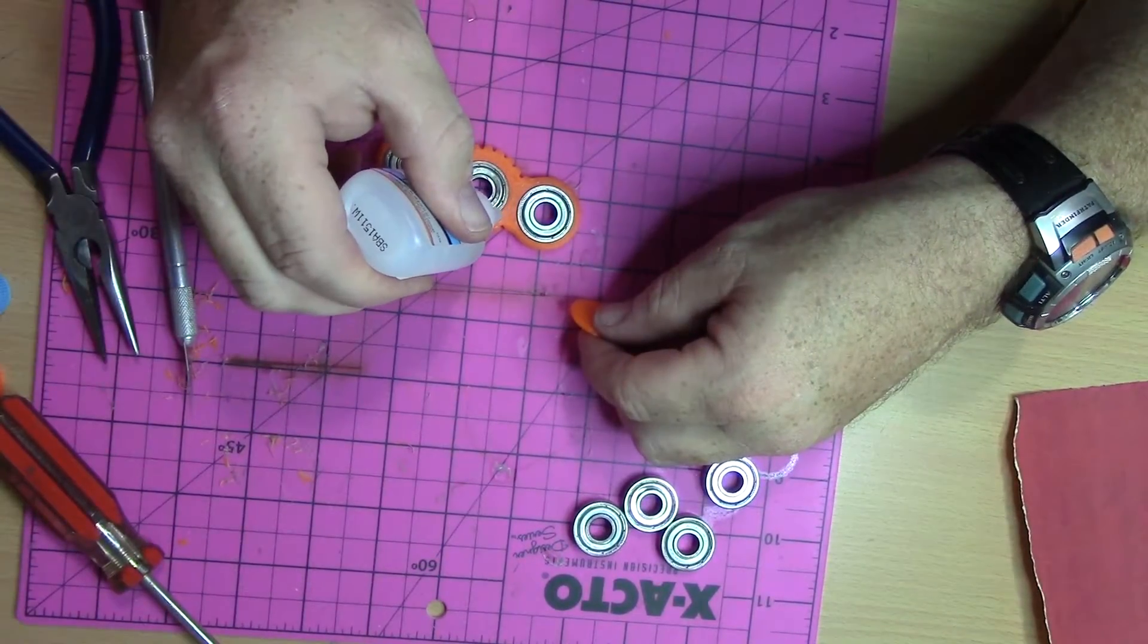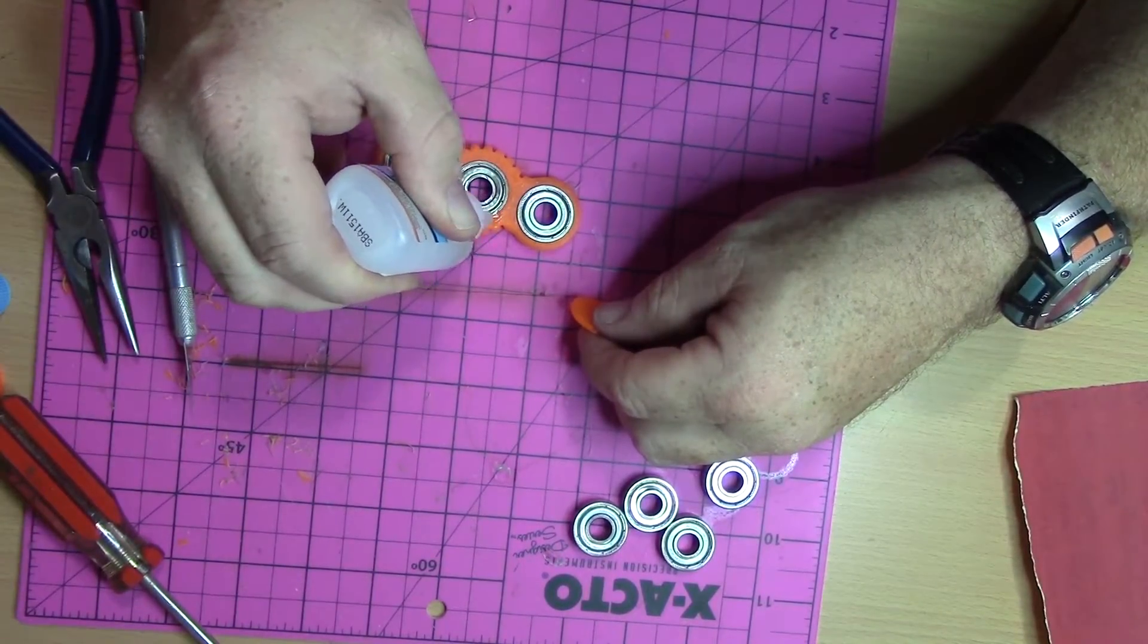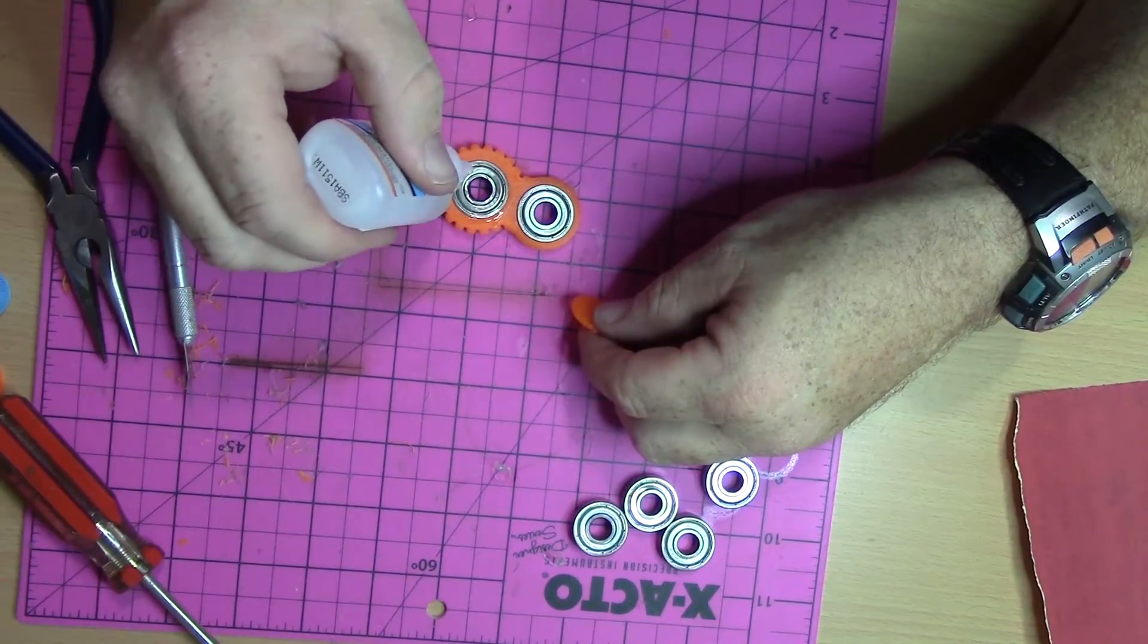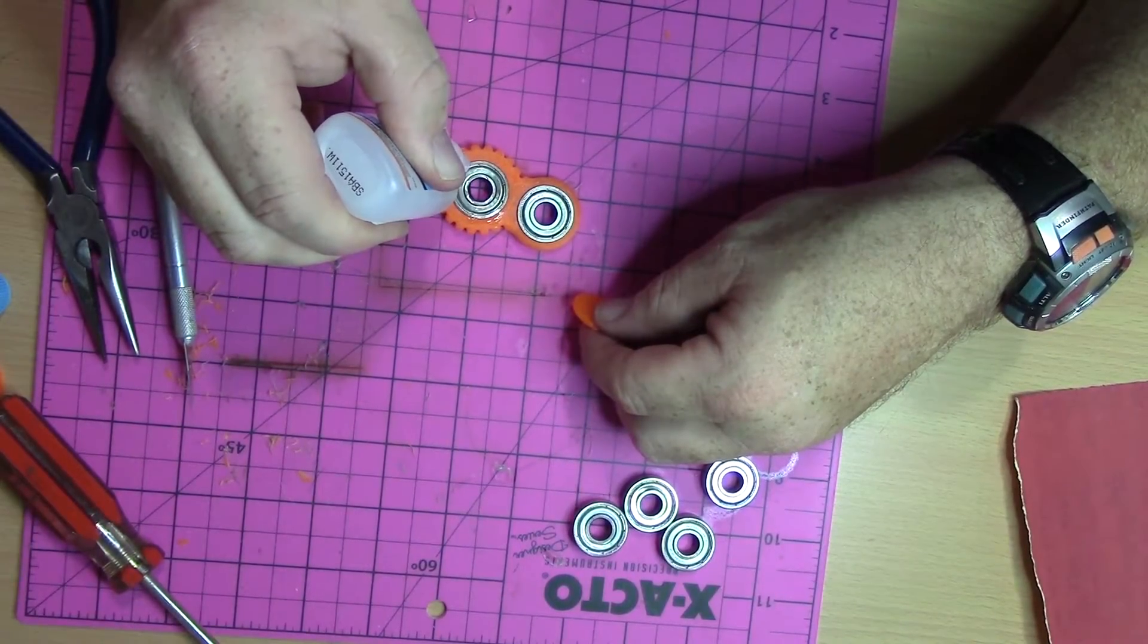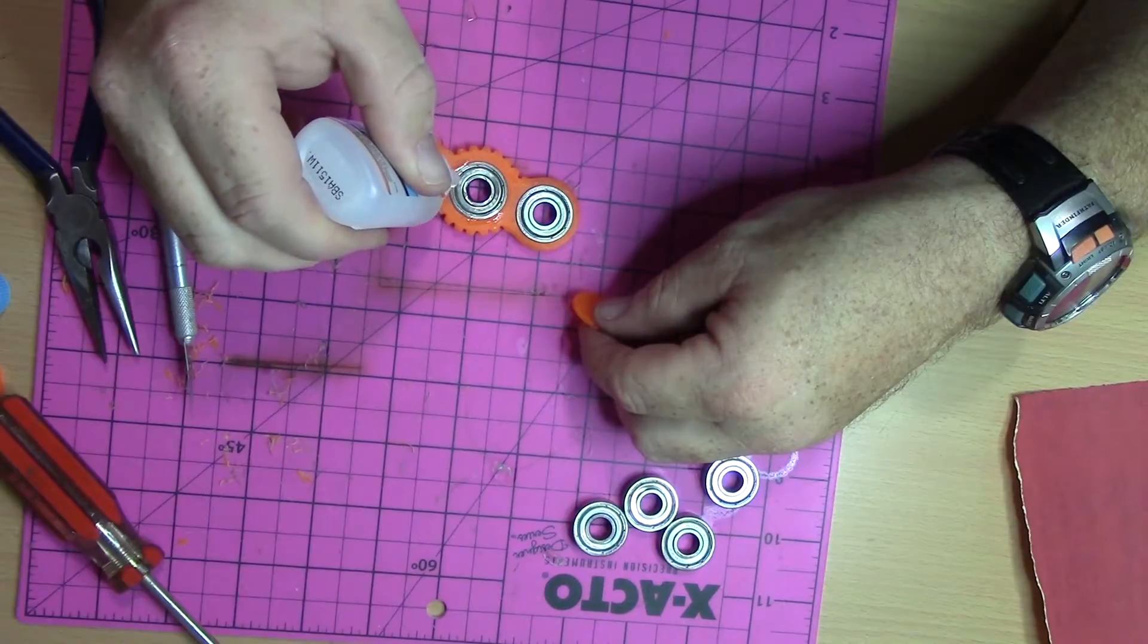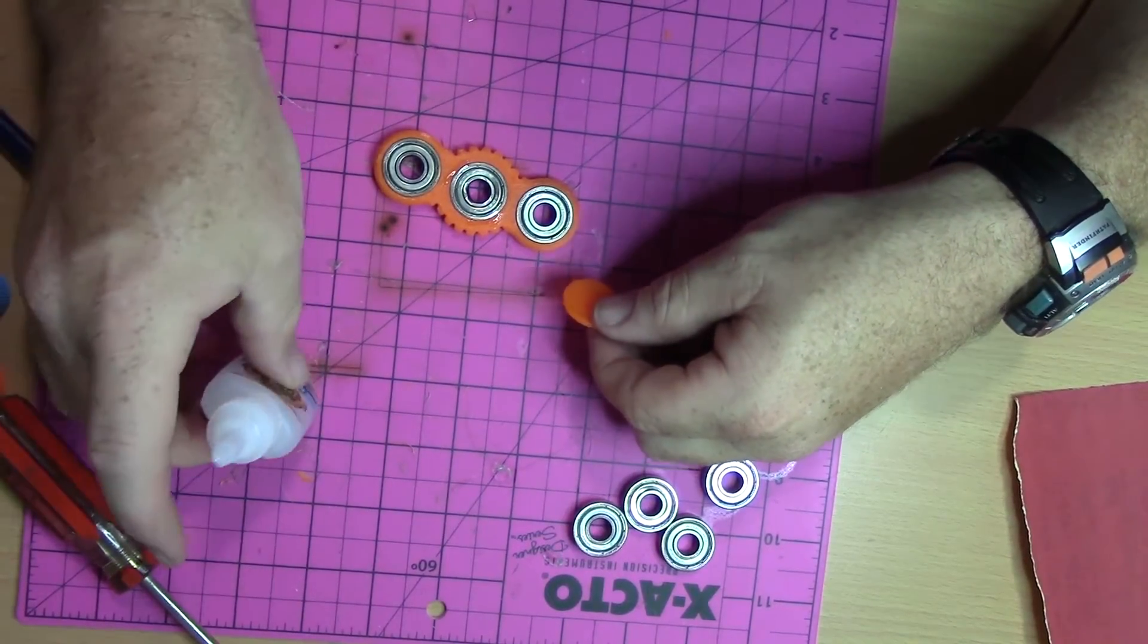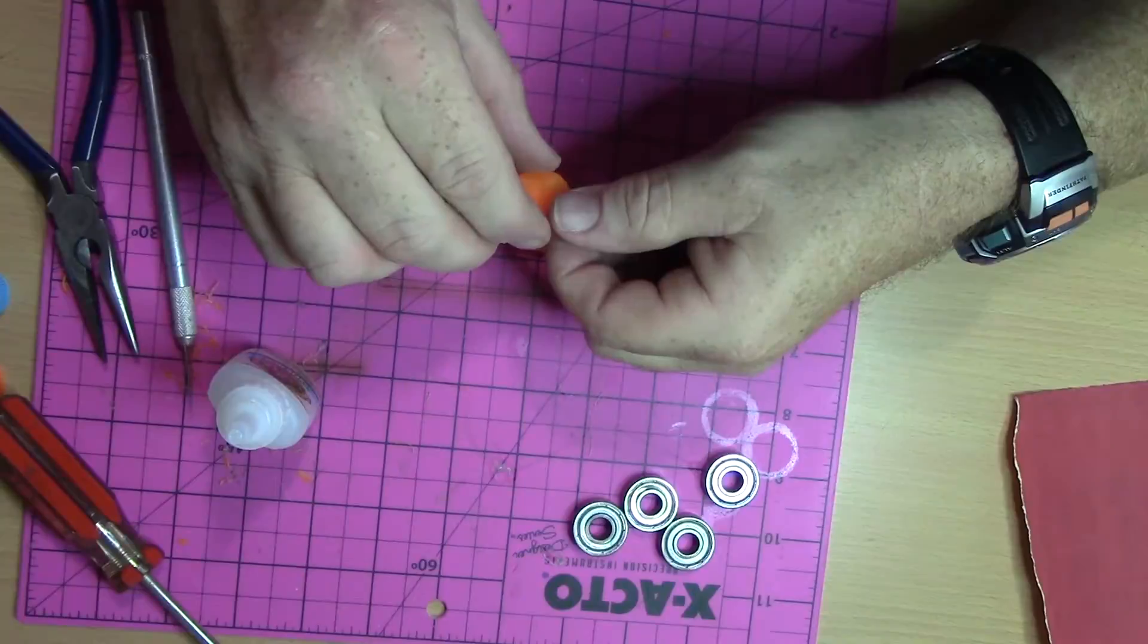I used a little glue between the outer edge of the bearing and the plastic to help secure it in place. Because this is spinning, I don't want anything to fly loose. This is pretty easy, you just have to be careful not to get any stuck in the bearing.